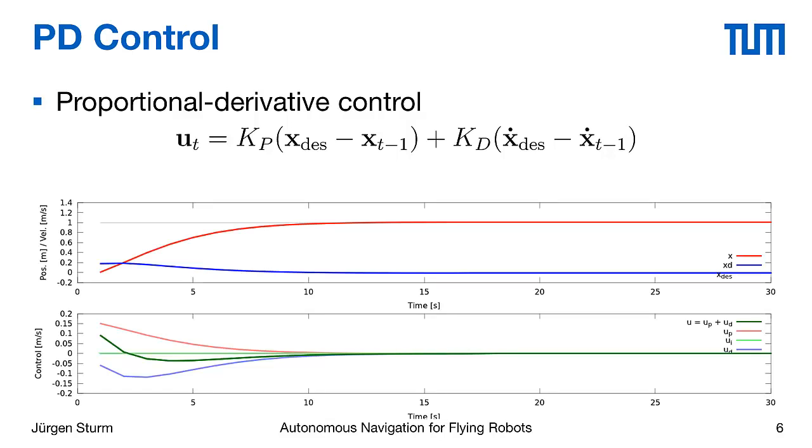And then this leads to the following behavior. In the bottom plot we still have a proportional part that will accelerate our body towards the desired location. The blue line shows the differential part now that immediately decelerates our body but at a smaller overall rate. This will lead to the nice behavior that we see in the first plot with the red line, that it moves towards our desired location but slows down before it actually hits it.